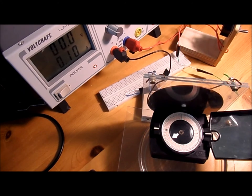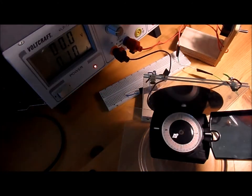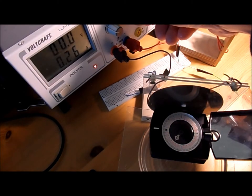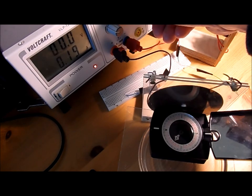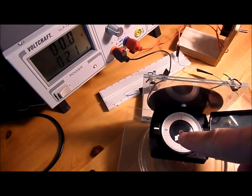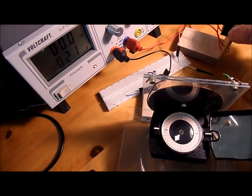I will now set the power supply to 200mA output. So now 200mA are flowing to the coil and we see the needle is deviated further.